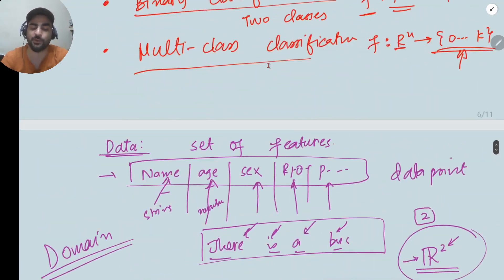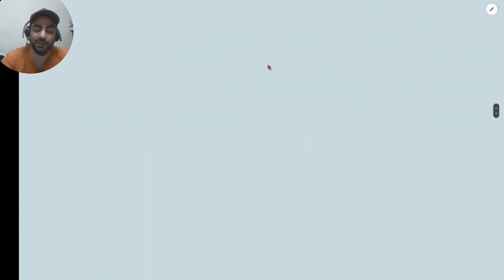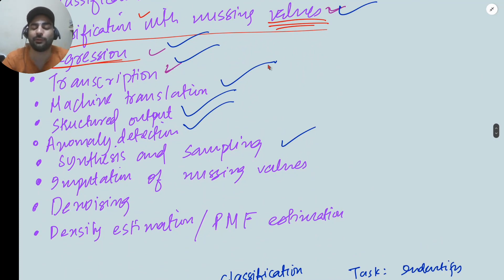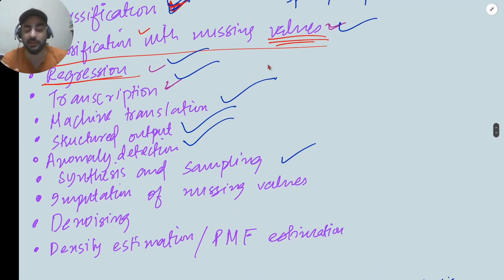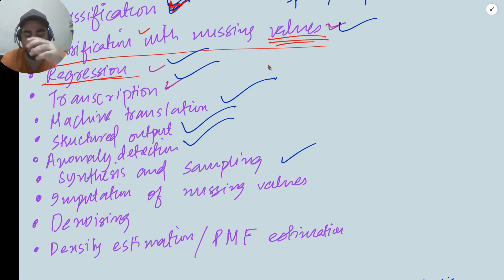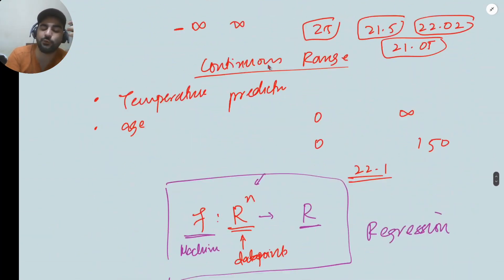So we covered what the meaning of a task is — what are the things that machines are able to do. We saw a list of tasks: classification, classification with missing input, transcription, machine translation, structured output, anomaly detection, synthesis, sampling, imputation to fill in missing values, denoising, and density estimation. These are the tasks we will usually be dealing with in our projects.